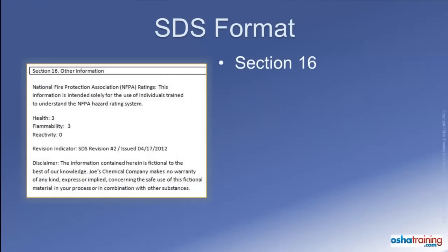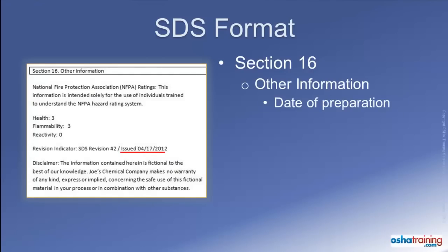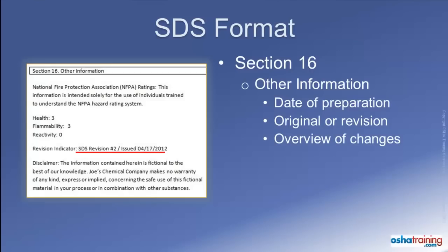And finally, Section 16 of Safety Data Sheets, titled Other Information, lists details such as the date the Safety Data Sheet was prepared, whether this is the original version or a revised version, and in some cases an overview of any changes made during the last revision. The manufacturer or distributor may also choose to put other information about their product in this section, as well as any applicable disclaimers.